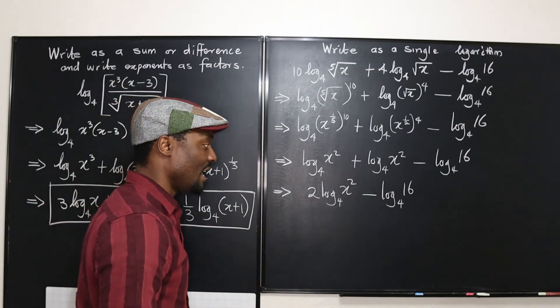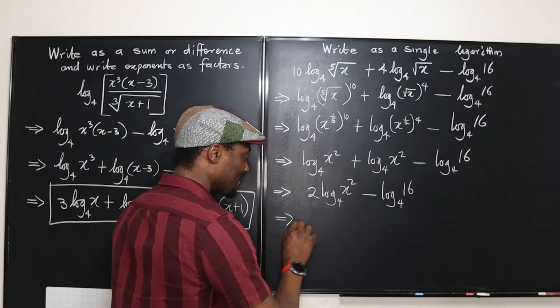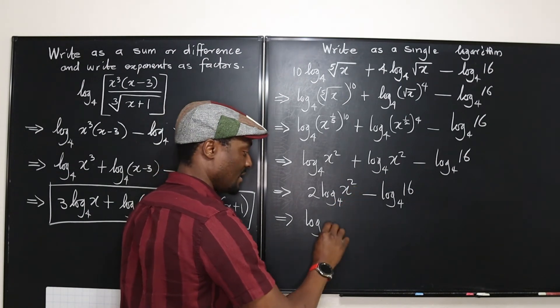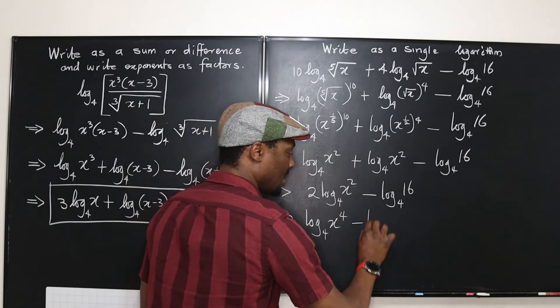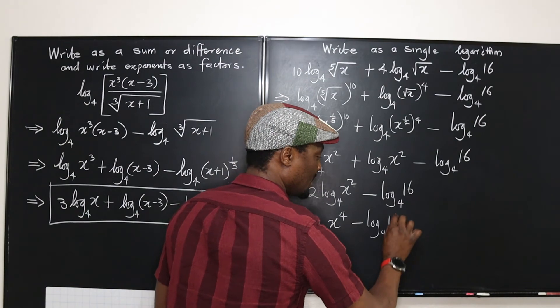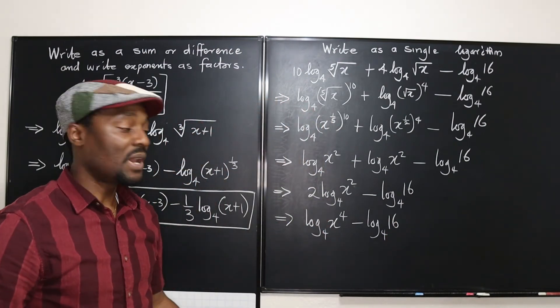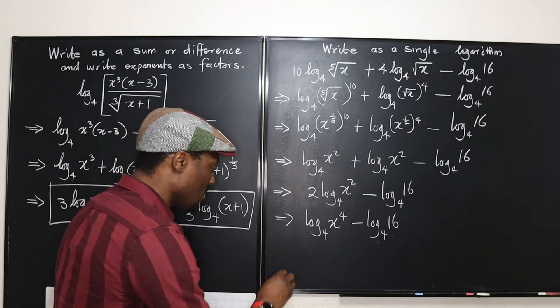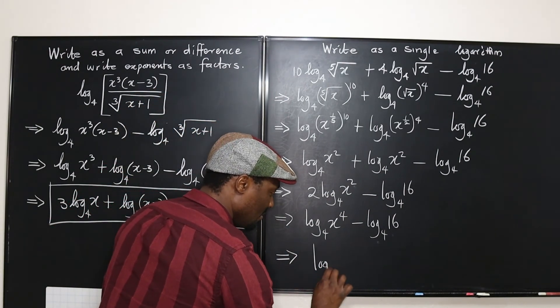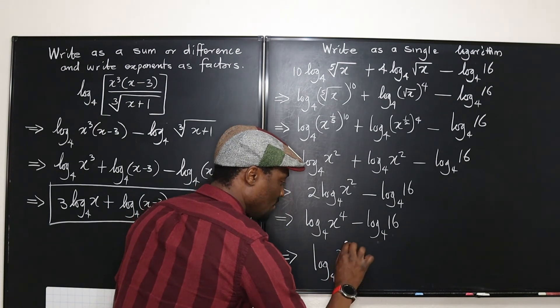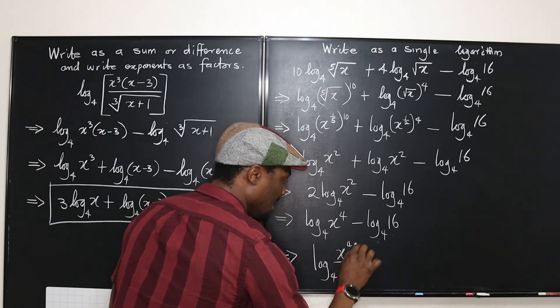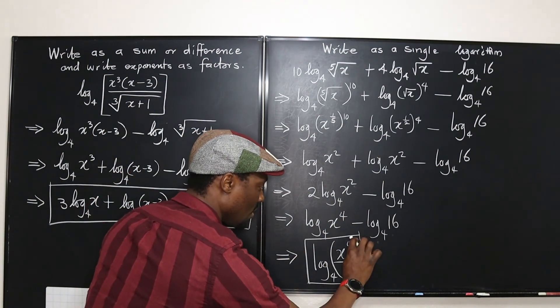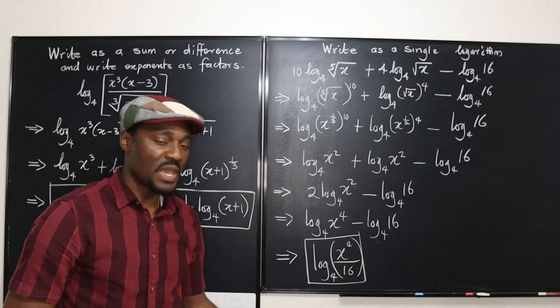But remember, we can't have this. So, now, we've got to move that up again. So, this is going to become logarithm to base 4. When this 2 goes in, it's going to multiply this and it's going to become x to the 4th. Minus logarithm to base 4 of 16. Well, now, we can apply. We're done because the 2 bases are the same and we only have 2 terms. So, we just say our final answer is going to be logarithm to base 4 of x to the 4th divided by 16. And that's your answer. So, we're taking the logarithm of this expression to base 4.